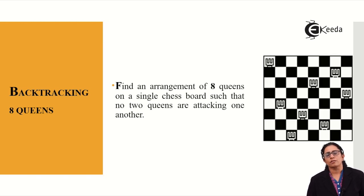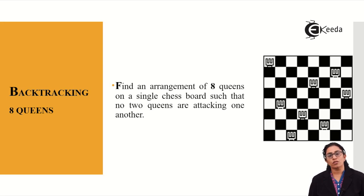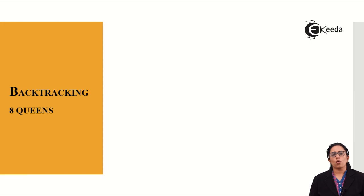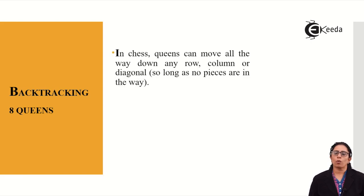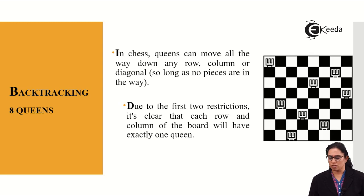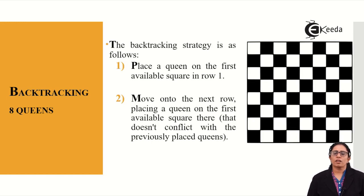Here is one arrangement where eight queens are placed on a chessboard and no queen cuts the path of another. In chess, a queen can move in any row, column, or diagonal as long as no pieces are in the way. Due to this restriction, it's clear that each row and each column on the board will have exactly one queen. So the backtracking strategy is as follows: place the queen on the first available square of row 1.